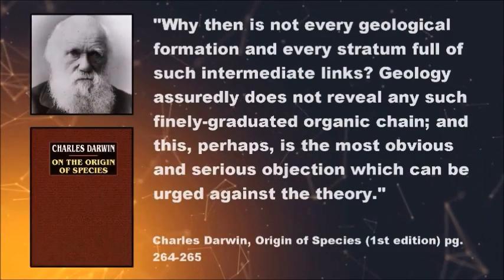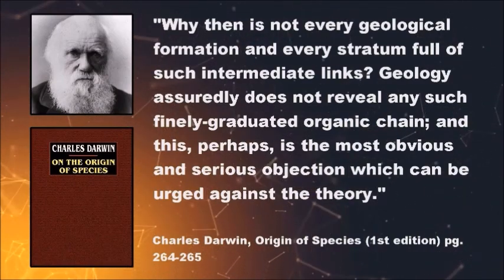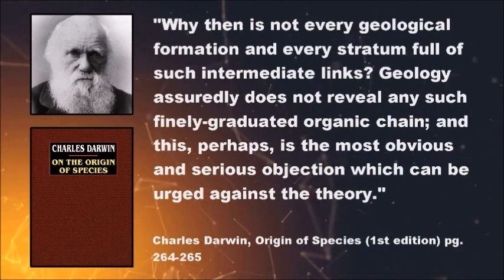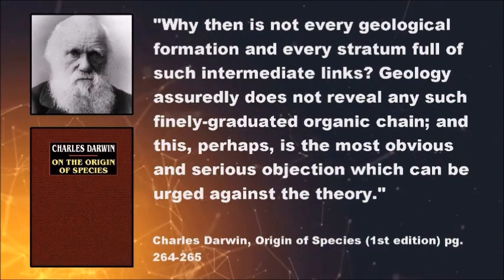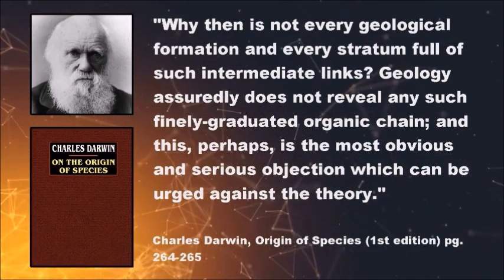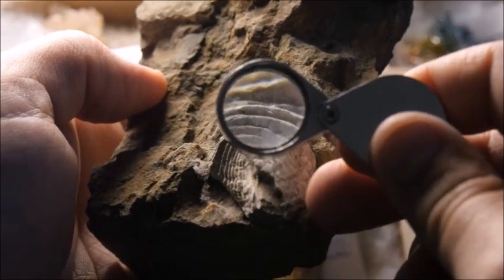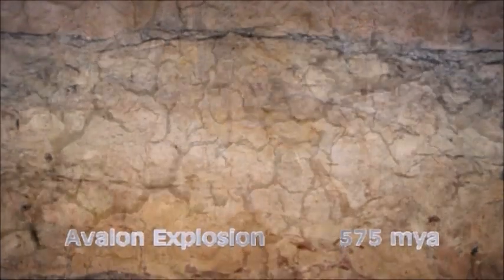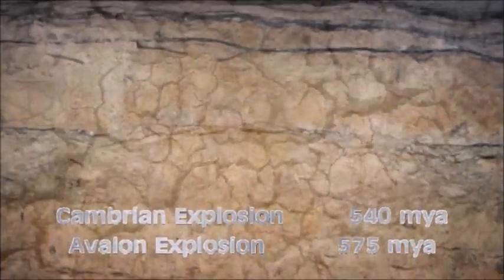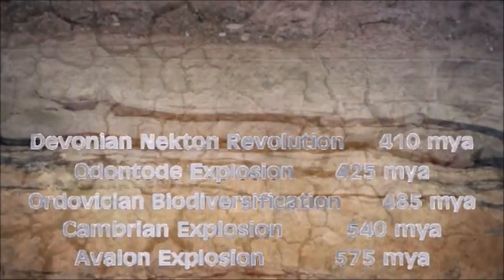Charles Darwin himself said: 'Why then is not every geological formation and every stratum full of such intermediate links? Geology assuredly does not reveal any such finely graduated organic chain, and this, perhaps, is the most obvious and serious objection which can be urged against the theory.' While the fossil record does not show a pattern even remotely resembling descent from a common ancestor, it looks exactly like we would expect if the polyphyletic model is correct. The fossil record contains a series of explosions where new types of animals appear suddenly, without evolutionary precursors, and subsequently diversify only slightly, just as the polyphyletic view predicts.